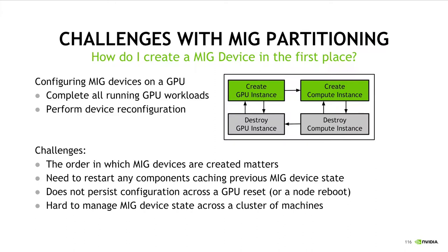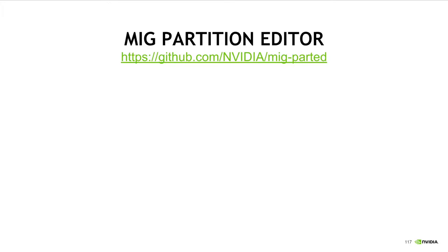In contrast, configuring the actual set of MIG devices on a MIG-enabled GPU is actually pretty dynamic, though it does come with its challenges. The order in which MIG devices are created on a GPU matters — you may end up with fragmentation and not be able to create a device that technically should fit. Additionally, you will need to restart any components that cache previous MIG device state after reconfiguration. MIG configurations do not persist across a node reboot, and managing MIG device state across a cluster of machines is not well supported. To address each of these challenges, we've created a tool called the NVIDIA MIG Partition Editor, or MIG Parted for short.